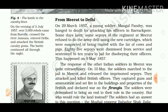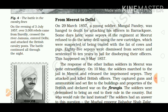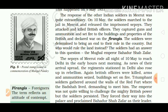The response of the other Indian soldiers in Meerut was quite extraordinary. On 10th May, the soldiers marched to the jail in Meerut and released the imprisoned sepoys. They attacked and killed British officers, captured guns and ammunition, and set fire to the buildings and properties of the British, and declared war on the Firangis. The soldiers were determined to bring an end to their rule in the country. But who would rule the land instead? The soldiers had an answer to this question.